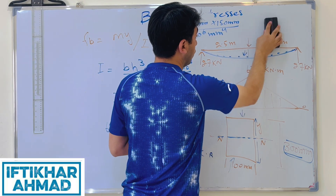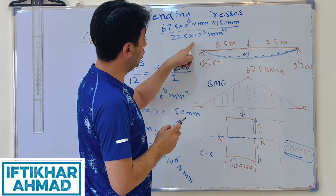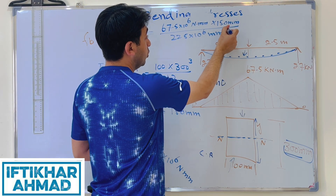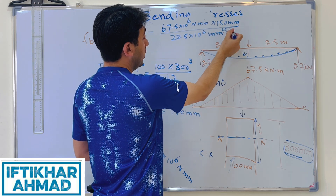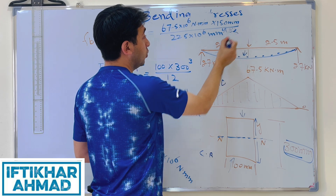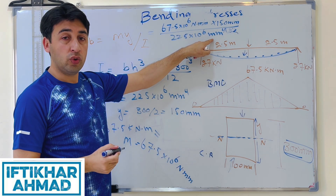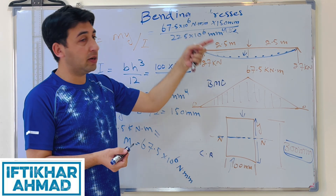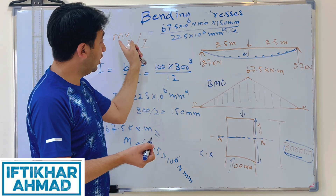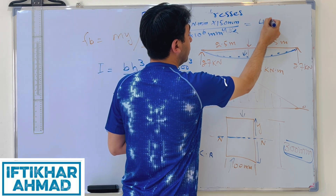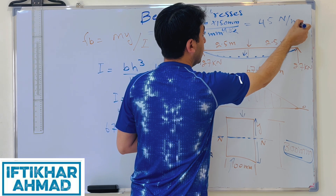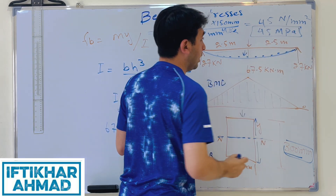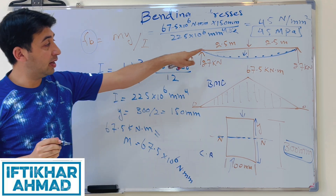Simplifying, the mm⁶ terms cancel to give N/mm², which is megapascals. Performing the calculation gives a bending stress of 45 N/mm², or 45 MPa. So the bending stress in this beam is 45 MPa.